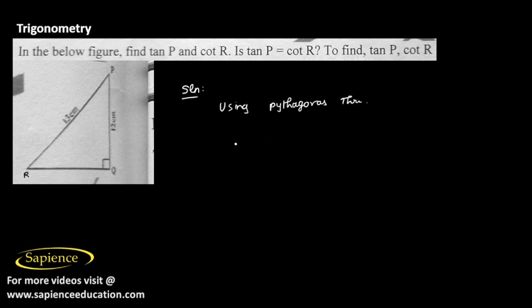Using Pythagoras theorem, we can say RQ square is equal to the hypotenuse, which is PR, square minus PQ square.